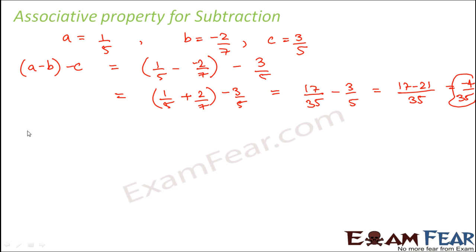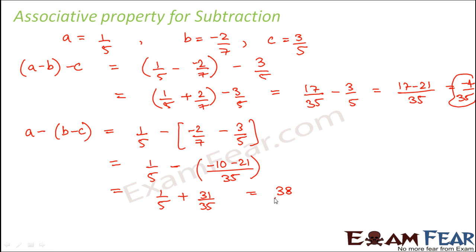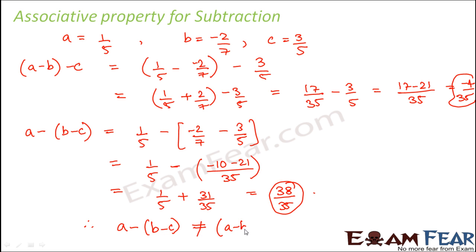Now we calculate (a minus b) minus c, which is (1/5 minus (-2/7)) minus 3/5. This gives 1/5 minus (-10 minus 21)/35, which becomes 1/5 plus 31/35, equal to 38/35. Comparing the two values, minus 4/35 and 38/35 are not equal, so we conclude that a minus (b minus c) is not equal to (a minus b) minus c — the associative property does not hold true for subtraction.